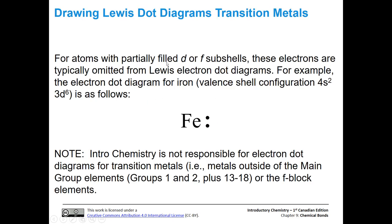For atoms with partially filled d or f subshells, those electrons are usually omitted from a Lewis electron dot diagram. For iron, instead of including 4s² and 3d⁶, we just put in the 4s², so iron is shown with two dots representing 4s². Note that introductory chemistry is not responsible for electron dot diagrams for transition metals — you're only responsible for the main group elements shown at the beginning of this presentation.